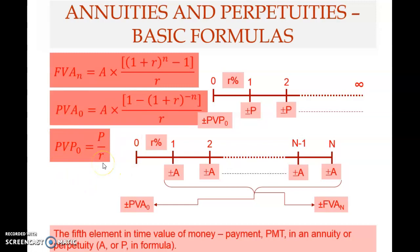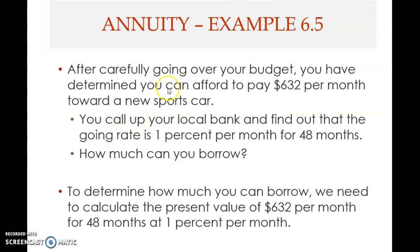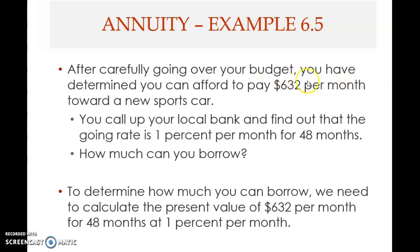Now let's look at an example. After carefully going over your budget, you have determined you can afford to pay $632 per month toward a new sports car. You call your local bank and find out the loan rate is 1% per month for 48 months. How much can you borrow? The known elements are: $632 per month — this is the annuity payment A.